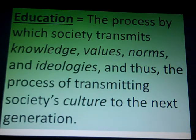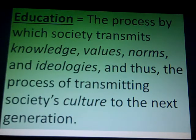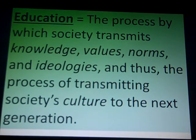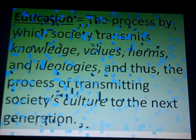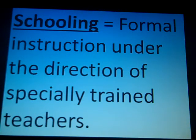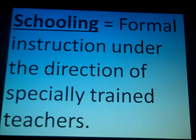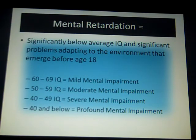Education, by definition, is the process where society transmits knowledge, values, norms, and ideologies — essentially transmitting society's culture to the next generation. There's more involved with education than just teaching academics or learning facts. Schooling, on the other hand, is formal instruction under the direction of specially trained teachers — so what happens in a classroom, or in a video lecture like this, represents schooling.